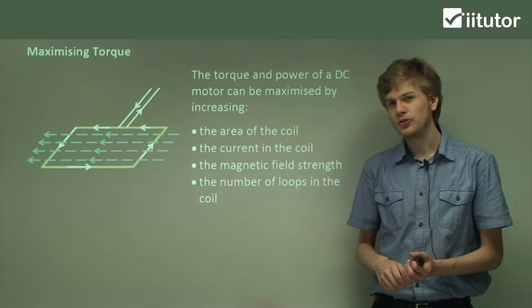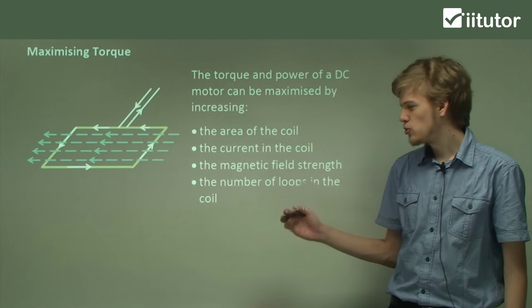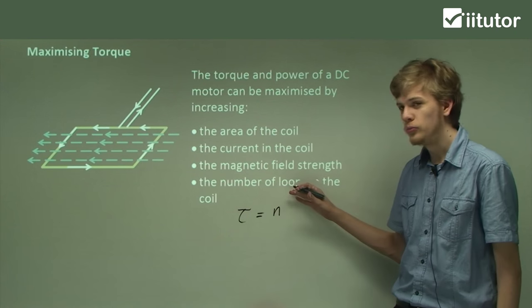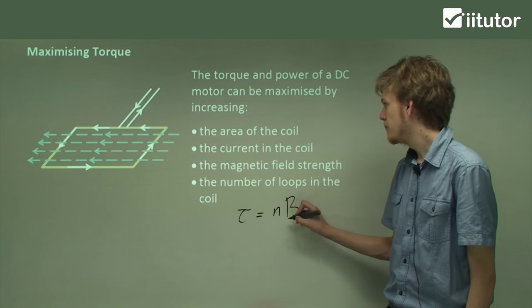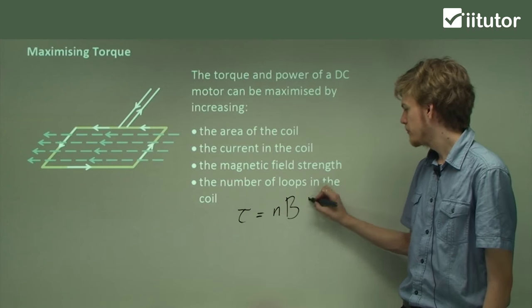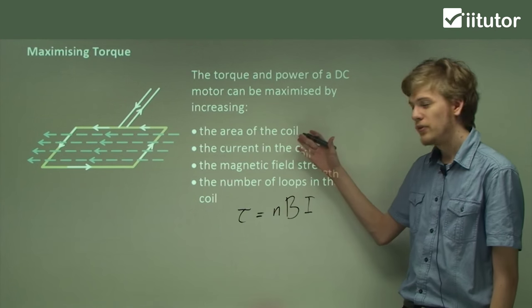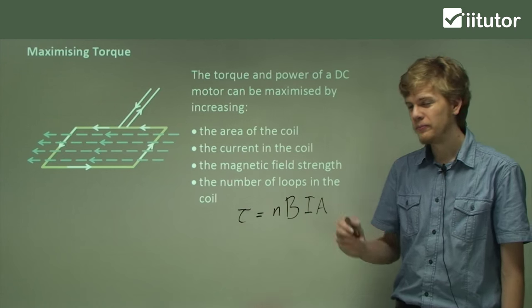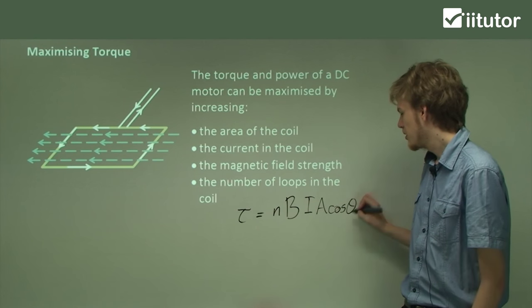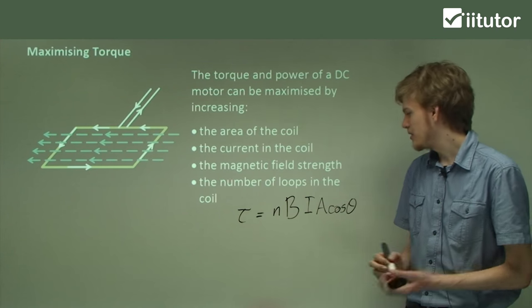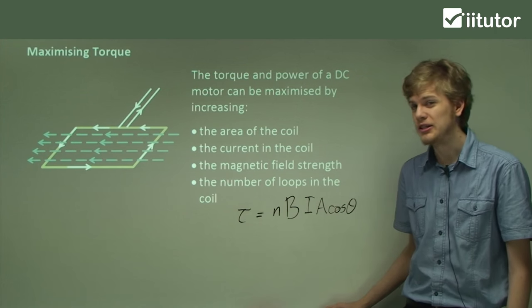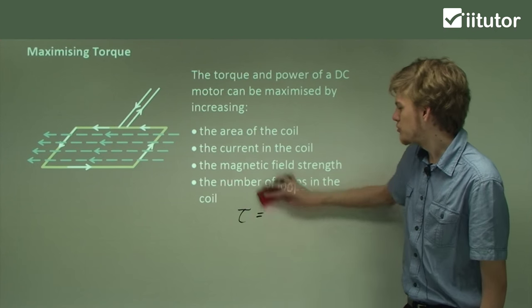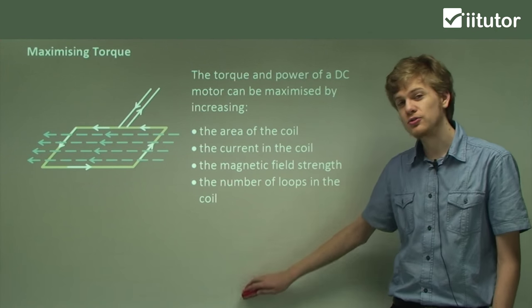All of these are, of course, represented in our equation for torque. Tau equals N, the number of loops, B, the magnetic field, I, the current in the coil, and A, the area of the coil. There's also a cosine theta, but of course if the motor is rotating, the cosine theta will be constantly changing. So we can see that the equation reflects all the ways that we can increase the strength of the motor.